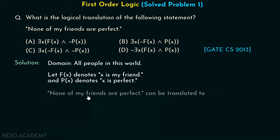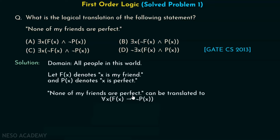'None of my friends are perfect' can be translated to: for all x, F(x) implies not P(x). We can easily write this statement, because 'none of my friends are perfect' means all my friends are not perfect.